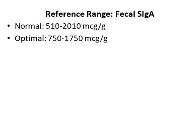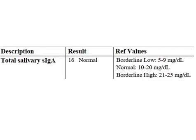Now let's take a look at some reference ranges for fecal secretory IGA. A lot of different comprehensive stool panels test for secretory IGA, including the GI Map by Diagnostics Solutions, which is the one I most commonly use in my practice. Genova Diagnostics is another excellent company that offers a comprehensive stool panel and they also test for secretory IGA. According to the GI Map, normal should be between 510 and 2010 micrograms per gram, and optimal between 750 and 1750.